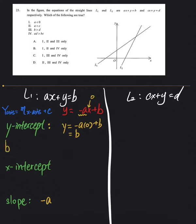And x-intercept kya hoga phir? X-intercept y-intercept ka opposite hai, that means ke is baar y ko zero banayenge. Hum pehli equation vaapas lete hain: ax plus zero equals to b. So ax equals to b, x equals to b over a. So from equation, haamari x-intercept b over a hai.